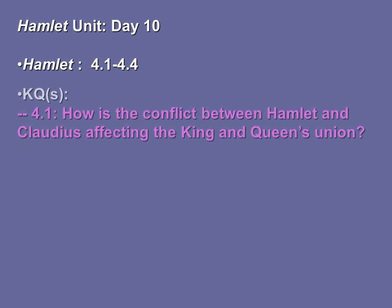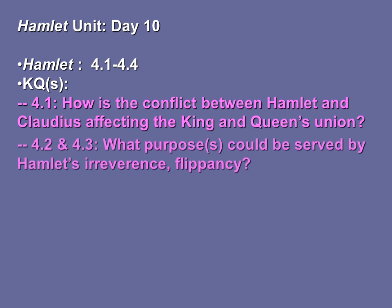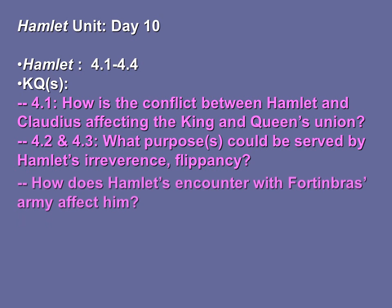Key questions for these scenes: How is the conflict between Hamlet and Claudius affecting the King and Queen's union? From Act 4, Scenes 2 and 3: What purposes could be served by Hamlet's irreverence or flippancy? How does Hamlet's encounter with Fortinbras's army affect him?